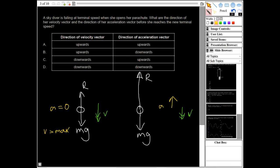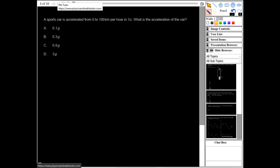Okay, moving on to question four. It says a sports car is accelerated from zero to 100 kilometers per hour in 3 seconds. What is the acceleration of the car? So we need to know that acceleration is the change in velocity, so v minus u, and divided by T. So we can see here it's accelerated from zero to 100, so v is 100, u is zero, and then T is 3.